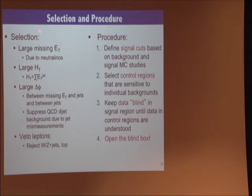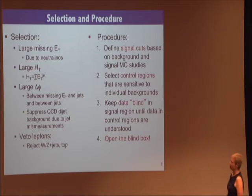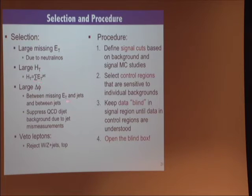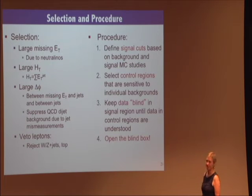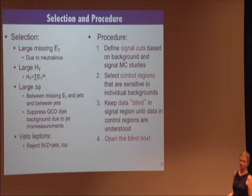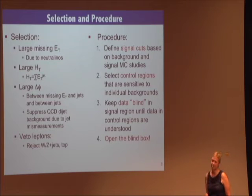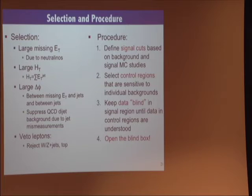Let me tell you about the jets plus missing ET generic analysis. We require large missing transverse energy — this is what we trigger on due to the neutralinos. We require large HT, the sum of transverse energies of all jets. We require that the missing ET is not aligned with any of those jets — this reduces mismeasurement where missing ET is caused by a severely under-measured jet. We veto electrons and muons — we call them electrons here but mean electrons and muons. We don't veto taus because many jets are also identified as taus.